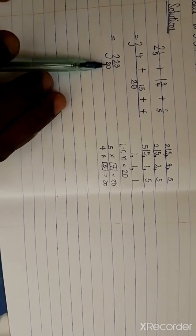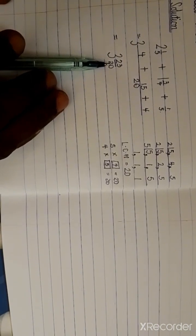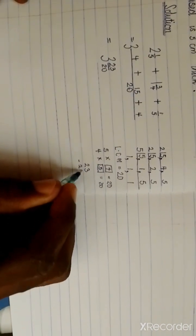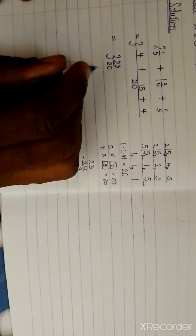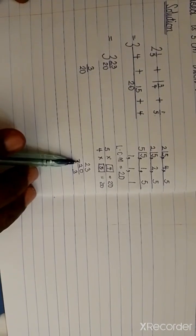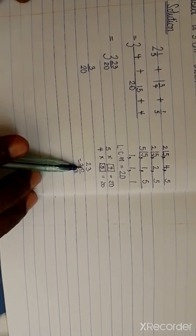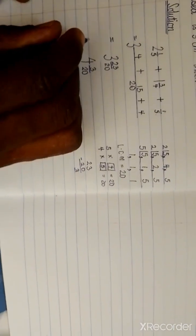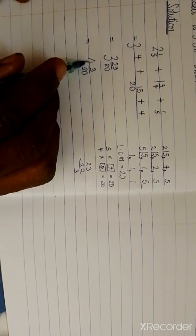Since twenty cannot hold twenty-three, we say twenty-three minus twenty, leaving three. So three remains as the numerator and the denominator stays twenty. Twenty goes into twenty-three just once, so that one adds to the three whole number to give four. Therefore the final answer is four and three over twenty centimeters.